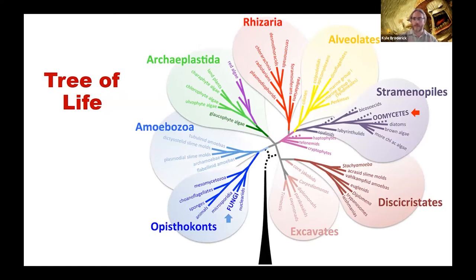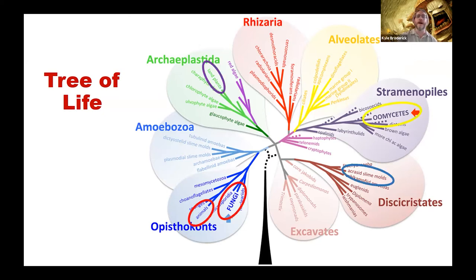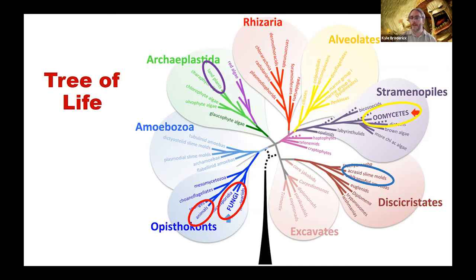I had mentioned how we classify life and we have our main kingdoms. This is a sketch of the tree of life, and there's a lot of stuff on here. You'll want to draw your attention to the things I've highlighted. If we look down in the Opisthokonta kingdom, that tends to be where we have our animals, but fungi are also in that same group.